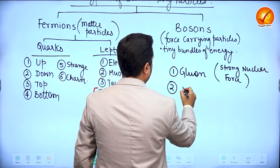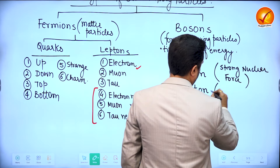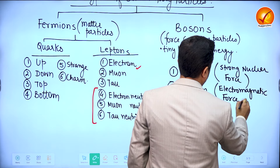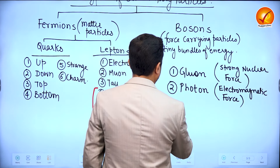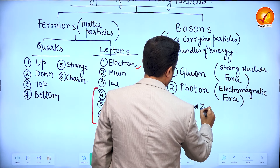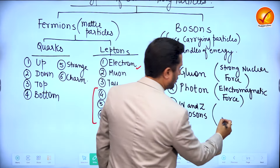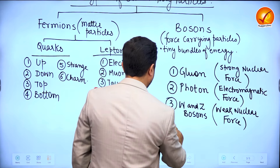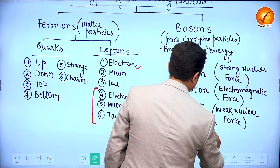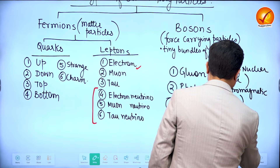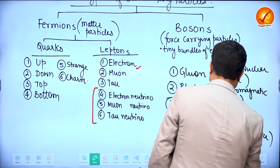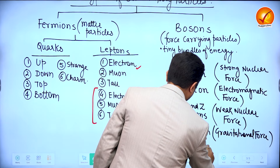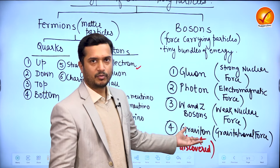Another very popularly known boson is the photon, which is responsible for electromagnetic force. Third is W and Z bosons, which are responsible for the weak nuclear force. Fourth is graviton, which is responsible for the gravitational force. But graviton is not yet discovered — up till now we have not been able to discover it through experiments.